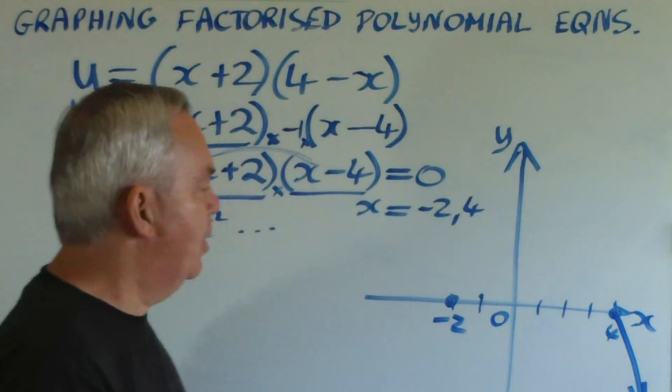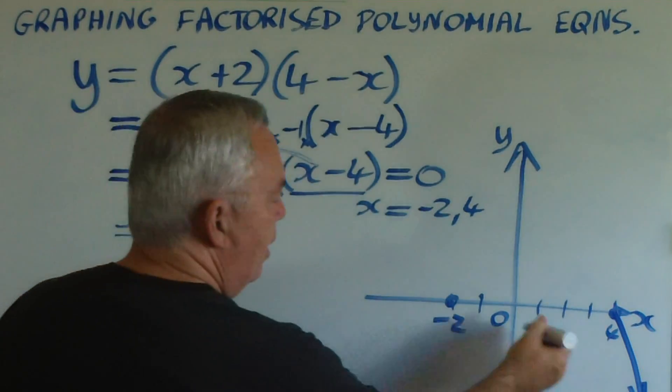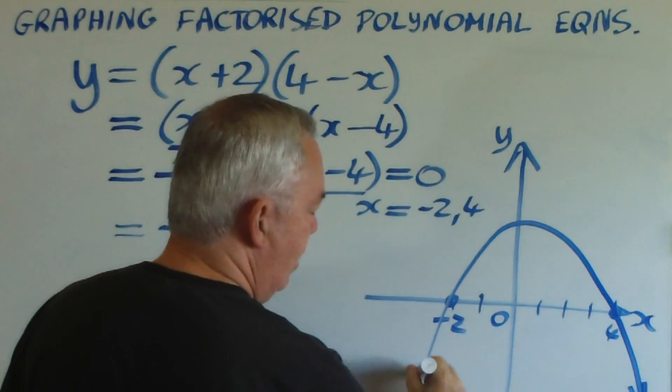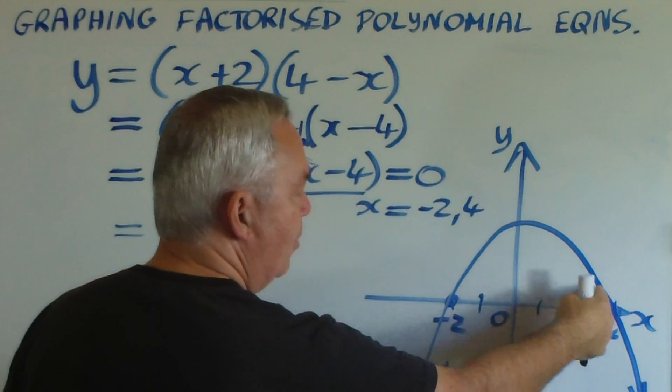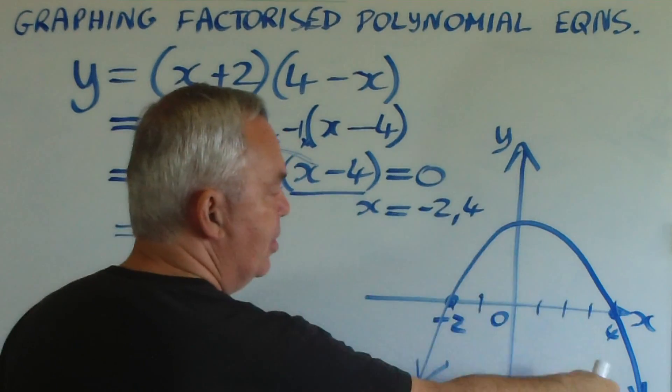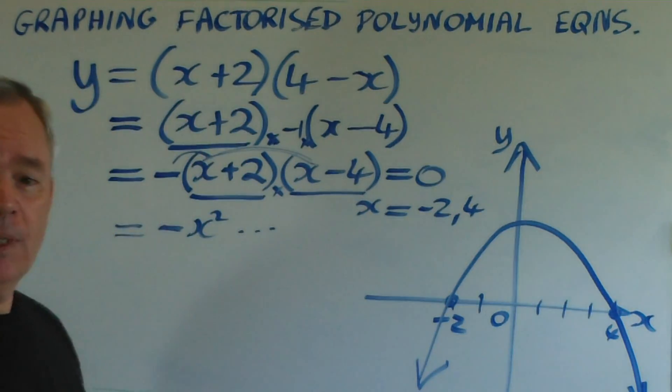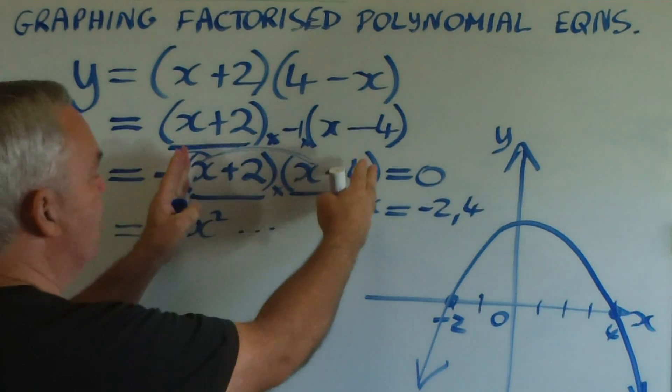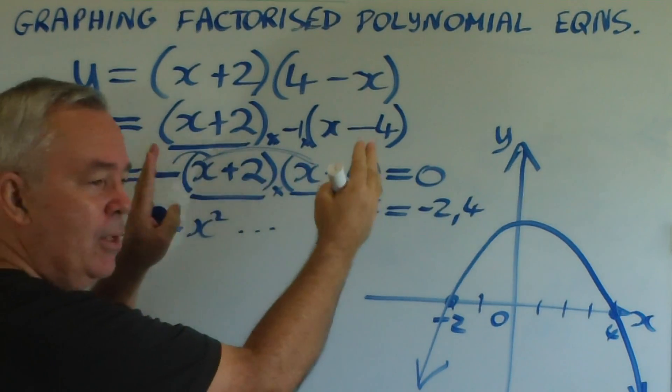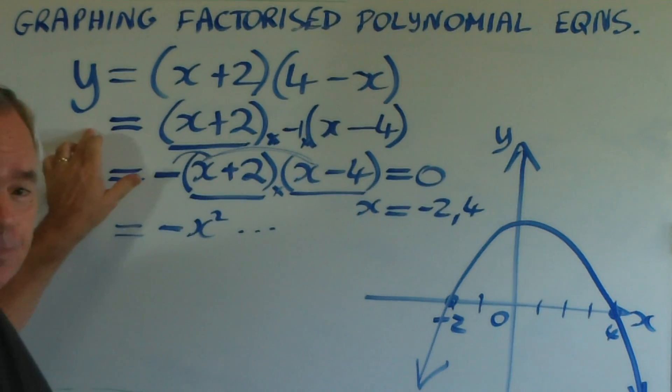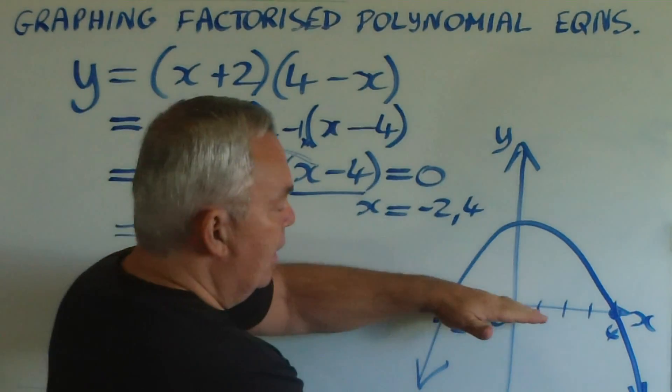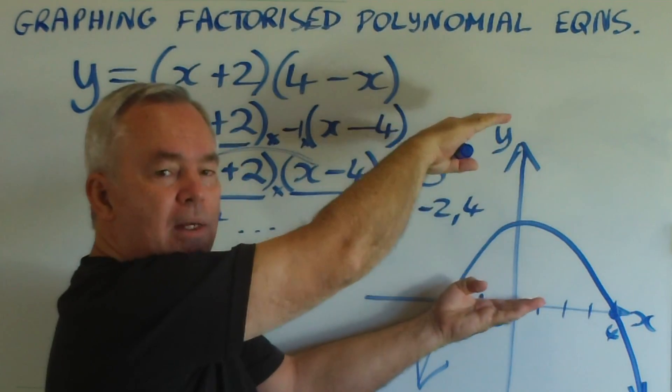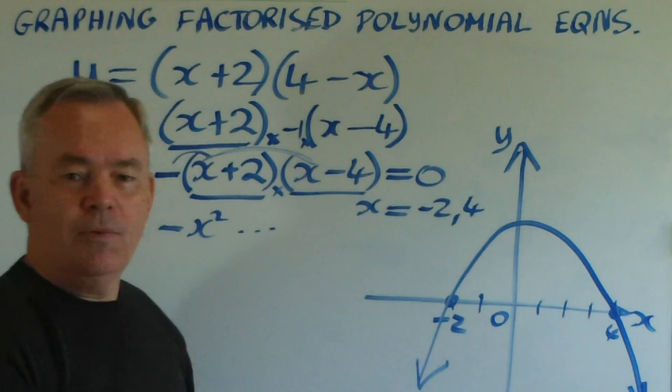Now, the rest of the graphing takes place as normal. That is, the graph has to come back through this root. You can see that we have an upside-down parabola because that minus sign has had the effect of making all the positive values negative and all the negative values positive for y. So what was in the negative part of the y-axis has now come up to the top, and what was in the positive part of the y-axis has now moved to the bottom.